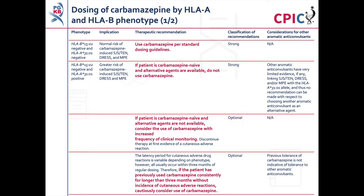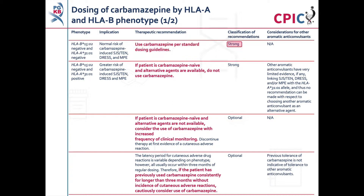These are the CPIC dosing recommendations for carbamazepine. Patients who are negative for both the HLA-A*3101 and HLA-B*1502 alleles are at normal risk of developing carbamazepine-induced severe cutaneous adverse reactions. These patients can be given carbamazepine using the standard dosing guidelines. This is a strong recommendation.